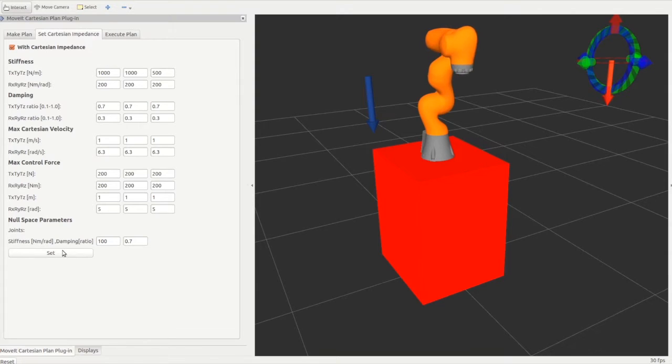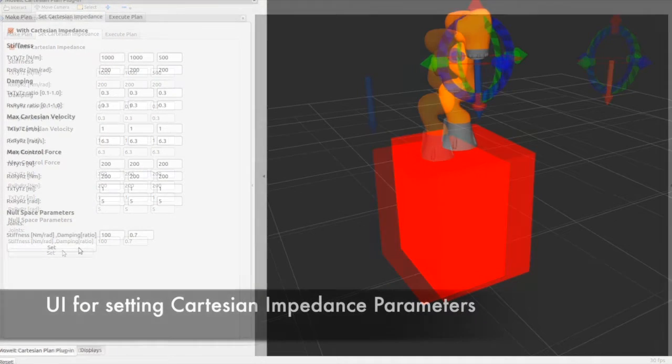As part of this Google Summer of Code project, we developed a set of messages containing the necessary parameters for Cartesian impedance control and an easy-to-use user interface which allows users to quickly change parameters and switch between operating modes.